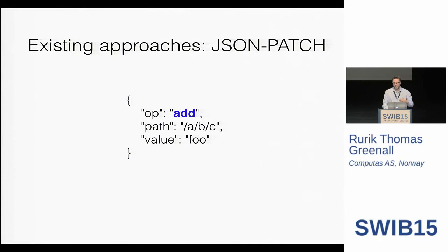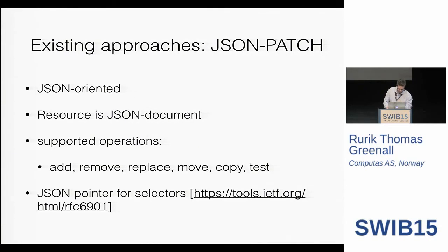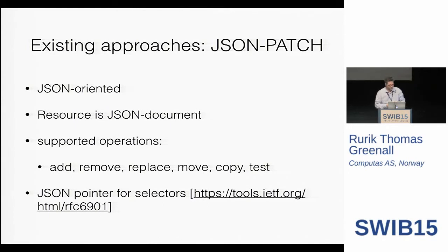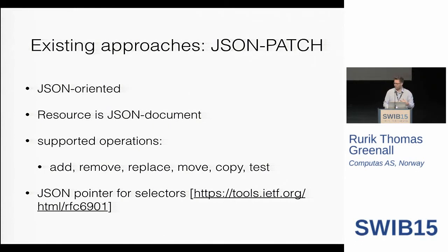With JSON Patch, you have an operation — we're saying we want to add some data. You have a path: add this to the path ABC in the document. And then you have the value you actually want to add, and you get that value in your JSON document at ABC. The result is a JSON document. It has a few supported operations, but I really only need add and delete. It also uses JSON Pointer to select things in the document, to what extent I'm not really sure.